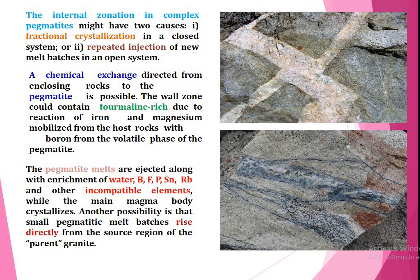The pegmatite melts are enriched along with water, boron, chlorine, phosphorus, tin, rubidium and other incompatible elements while the main magma body crystallizes. Another possibility is that the small pegmatite melt batches rise directly from the source region of the parent granite.